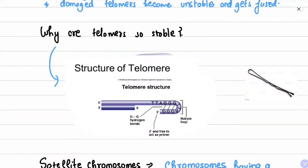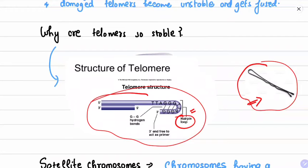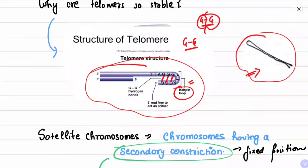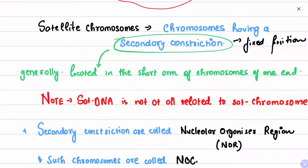Telomeres are so stable because of the hairpin loop structure. A hairpin loop is formed by the telomeres, in which a G-G bond — guanine-guanine hydrogen bonding — helps in the stabilization of the telomeres and hence the entire chromosome. Because G-G bonds are strong and difficult to break, the telomeres remain highly stable. If asked in an examination, the answer is: G-G hydrogen bonding leads to the formation of a hairpin loop.